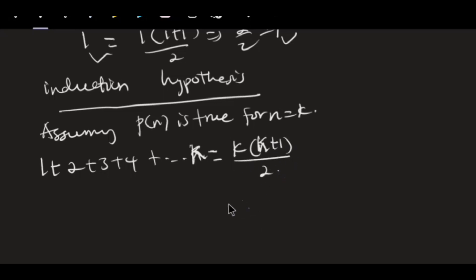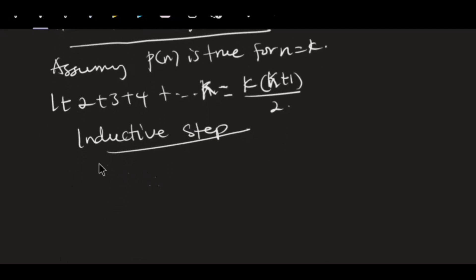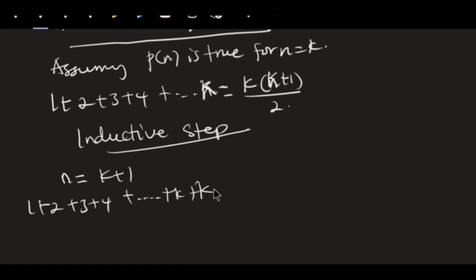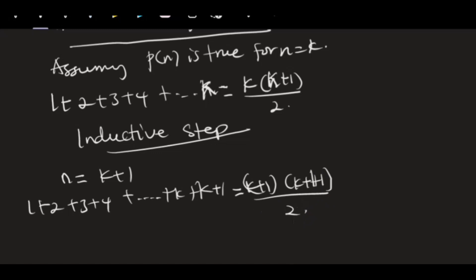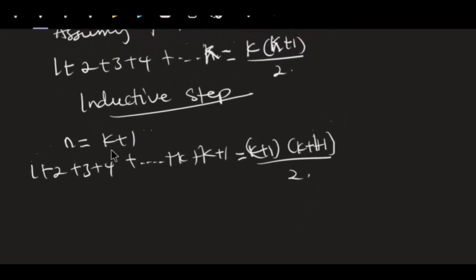Then we move to the inductive step, which is the main focus of mathematical induction. At this step we have to prove that our statement is true for n equals k plus one. Hence we are going to have one plus two plus three plus four plus dot dot dot plus k plus k plus one itself, because we are moving to the next step. This should be given as — wherever you see k, replace it with k plus one — k plus one times k plus one plus one all over two.